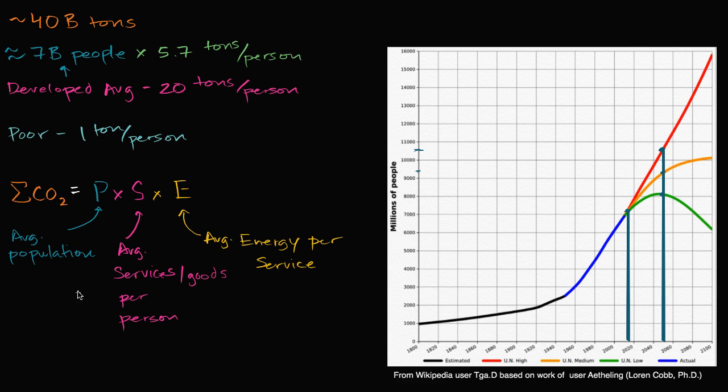And then finally, to get us to the sum of CO2 released in a year, we have to multiply by the CO2 released per unit of energy.